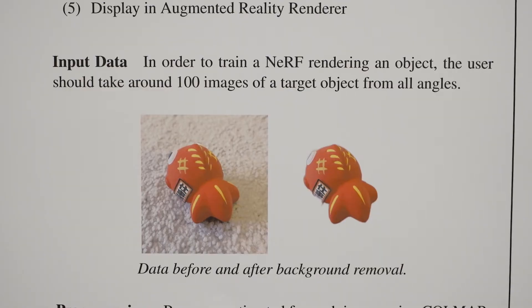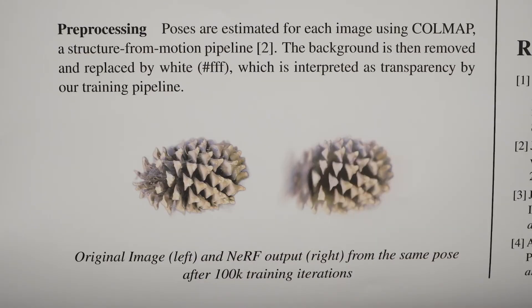Our input data consists of around 100 images from all different angles, which we've then removed the background from, as you can see on our poster here. We perform a preprocessing step using Colmap, which is a structure-from-motion pipeline, in order to estimate poses — the relative locations of each of the cameras when we took each of the images. We also remove the background so we can properly have transparency in our scene, which is done by replacing it with white, which is what our pipeline interprets as transparent.